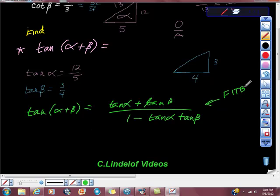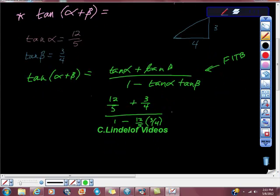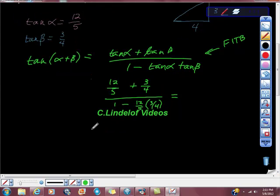So tan(α) is 12/5 plus 3/4, all over 1 minus 12/5 times 3/4. Converting to common denominators: 12/5 is 48/20, plus 15/20 in the numerator.